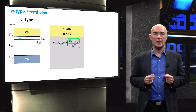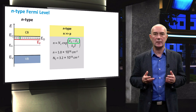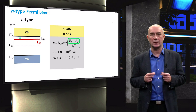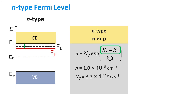Using the example from the previous slide where N equals 10¹⁸ per cubic centimeter, and knowing the effective density of states in the conduction band of silicon, solving for the Fermi level is quite straightforward. We end up with a value of −0.09 eV, meaning that the Fermi level is only 0.09 eV below the edge of the conduction band.